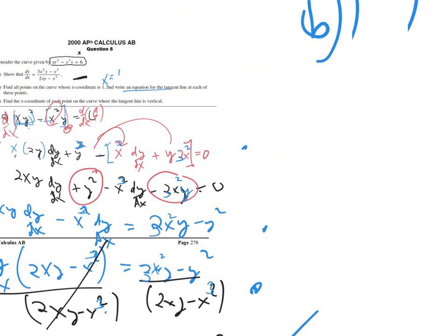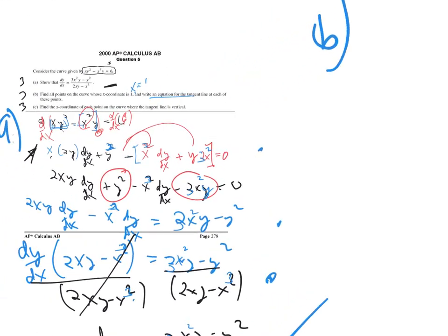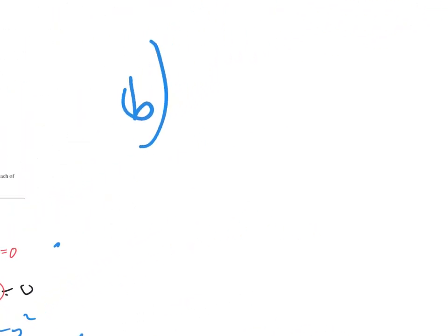So what I need to do is if X equals 1, I need to plug 1 in for every X. So the original problem — could you read it back to me, Aaron? The original problem is: 2Y cubed plus 6X squared times Y minus 12X squared plus 6Y. Actually, the original problem is XY squared minus X cubed Y equals 6.